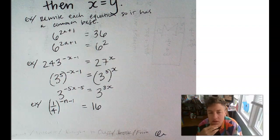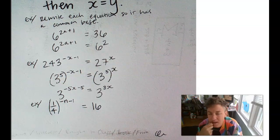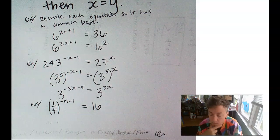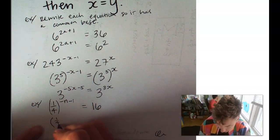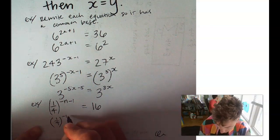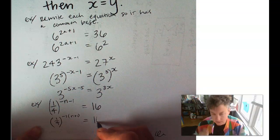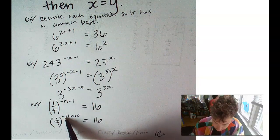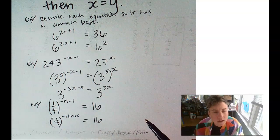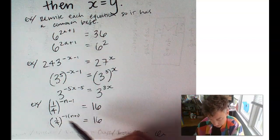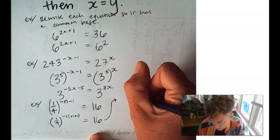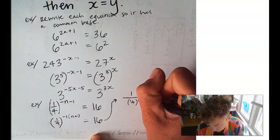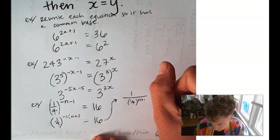We'll have a fraction to a negative exponent. Well, we rewrite this and take a negative 1 out. And, when we have a negative exponent, we know we could move that into the denominator. So, this could become 1 over 1/4 to the positive n plus 1 equals 16.